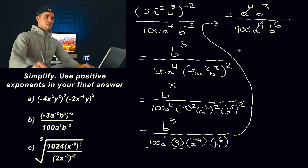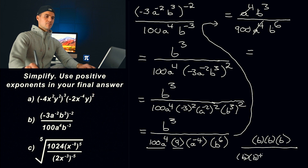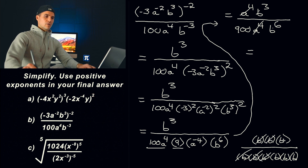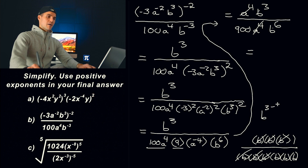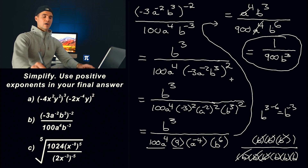So there are no a's in the final answer. Now we have b to the 3 over b to the 6 — there are 3 b's on top and 6 on the bottom. Cancel them out and we're left with 3 in the bottom. You could also think of it as b to the 3 minus 6 equals b to the negative 3, which you bring down to the denominator. Either way, there are going to be three b's left in the denominator, the 900 is still there, and we have 1 on top. Final answer for part B: 1 over 900 b to the 3.